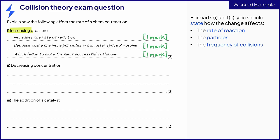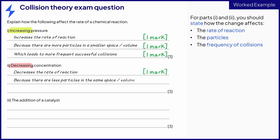Part two is about decreasing concentration. This means that the rate of reaction will decrease for one mark. This is because there are fewer particles in the same amount of space for the second mark.